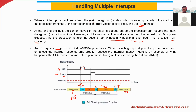Tail chaining can accept a maximum of six cycles. If you want to read more detail about how to handle multiple interrupts, a reference link has been provided here from several different sources.